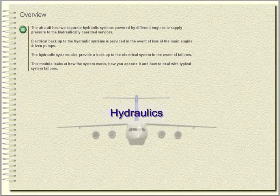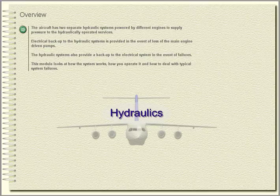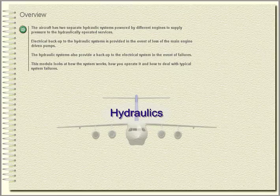Overview. The aircraft has two separate hydraulic systems, powered by different engines to supply pressure to the hydraulically operated services. Electrical backup to the hydraulic systems is provided in the event of loss of the main engine-driven pumps. The hydraulic systems also provide a backup to the electrical system in the event of failures. This module looks at how the system works, how you operate it, and how to deal with typical system failures.